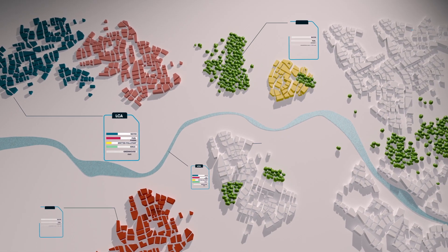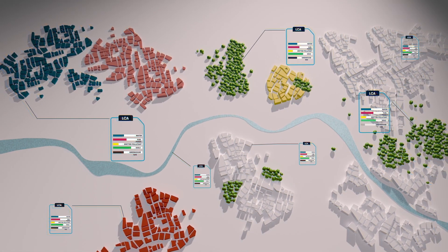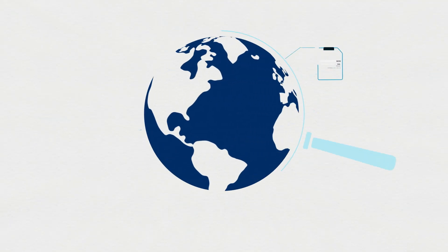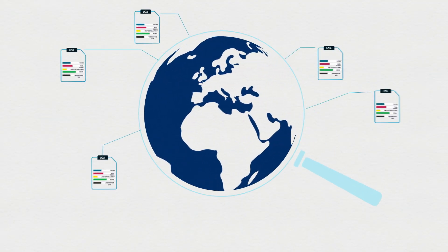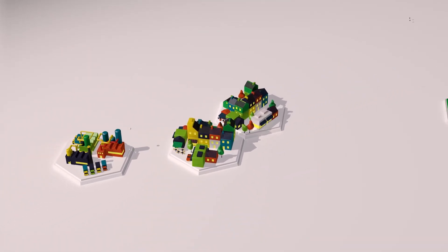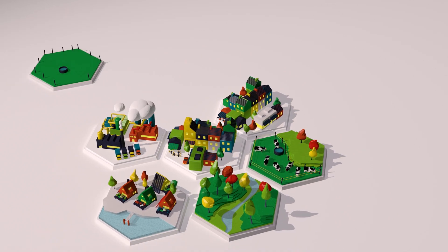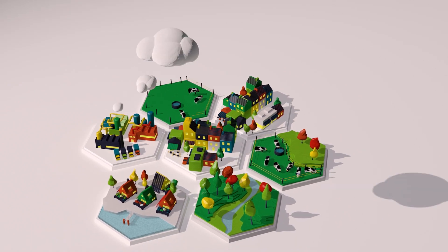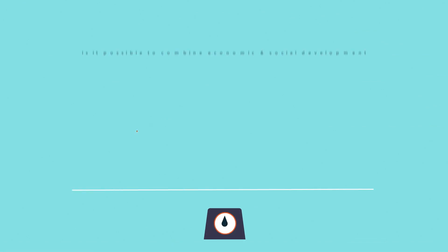The territory is actually the appropriate scale for achieving more in-depth changes in our modes of production and consumption, and for addressing the challenges raised by the ecological transition. Let us take the example of a local authority that is drawing up a planning strategy for a large urban area as part of a sustainable development project.